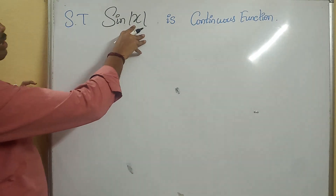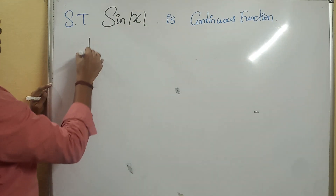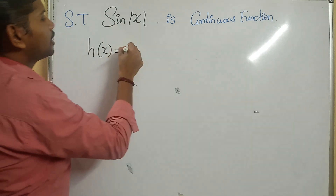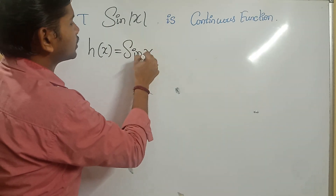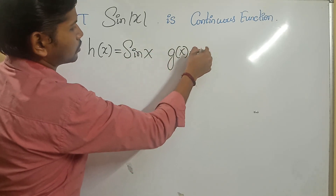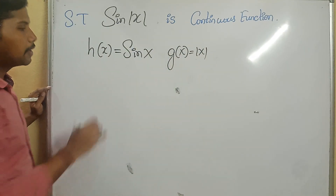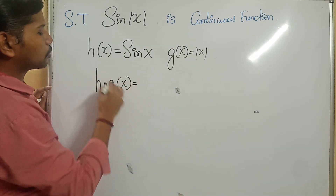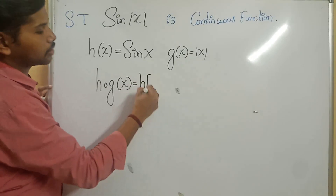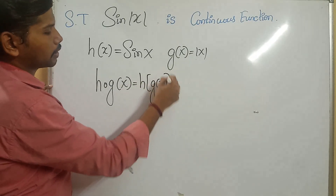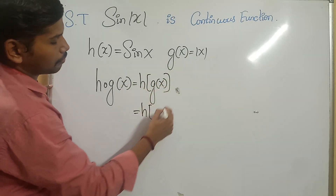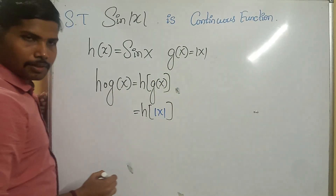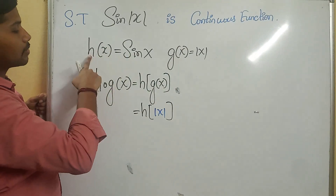Next: show that sin(|x|) is continuous. Here the outside function is sin x, so h(x) = sin x. The inside function is g(x) = |x|. So h∘g(x) = h(g(x)) = h(|x|) = sin(|x|).